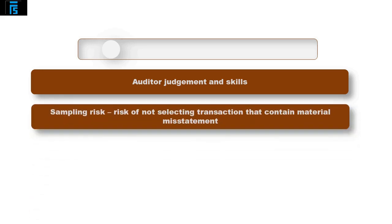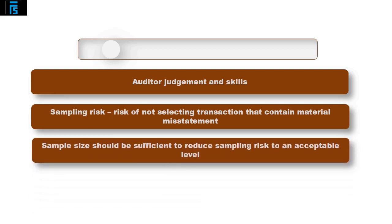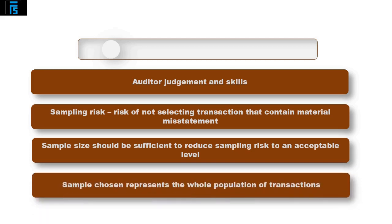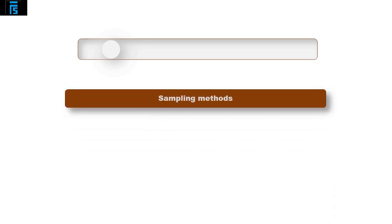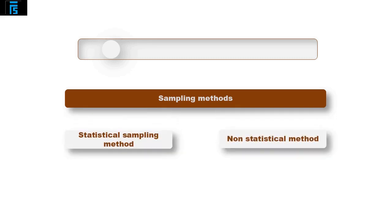This requires auditor judgement and skill. There is always an element of risk that a transaction not selected will contain a material misstatement — this is known as sampling risk. The auditor must ensure the sample size selected is sufficient to reduce sampling risk to an appropriate level, and that the sample chosen represents the whole population. The auditor decides on an appropriate method to choose the sample, with options categorised into statistical and non-statistical methods.